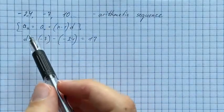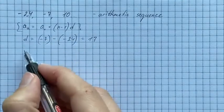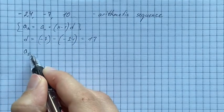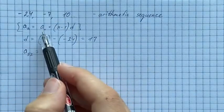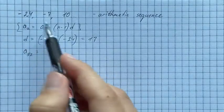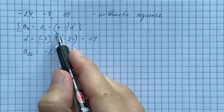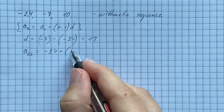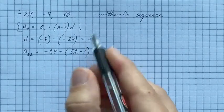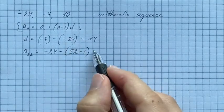Now we're going to use our formula. Therefore the 52nd term equals first term is negative 24 plus n is 52 and d is 17.